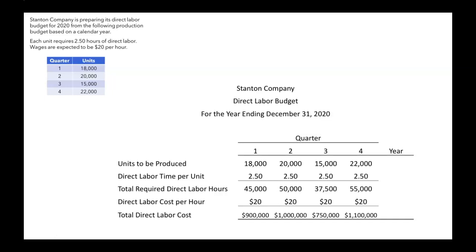Over on the far right of our direct labor budget, we have a column for the year. The only spot that's going to be filled in here for the year is our total direct labor cost for the entire year. Adding up the four quarterly direct labor costs, we can see that in 2020 we expect to spend $3,750,000 on direct labor.